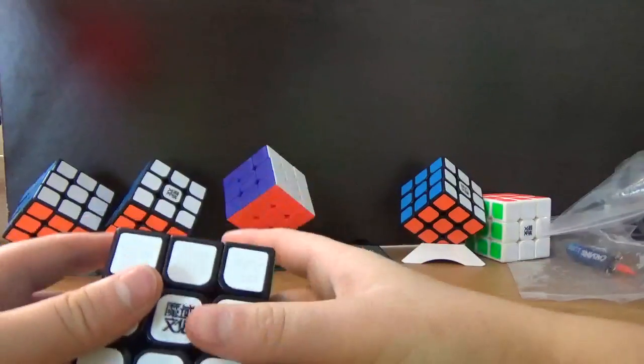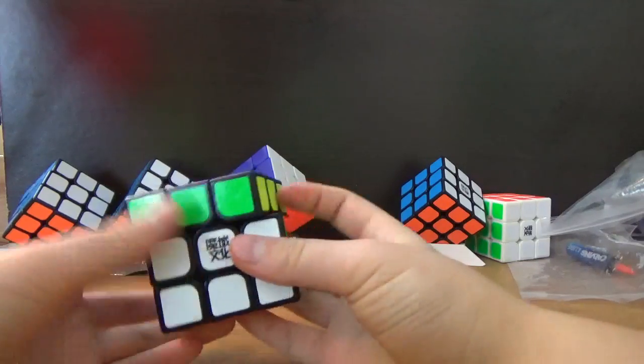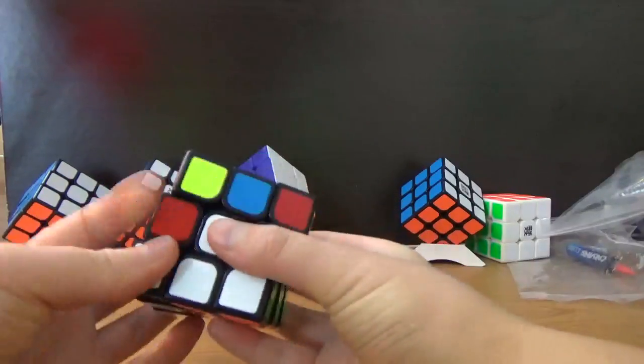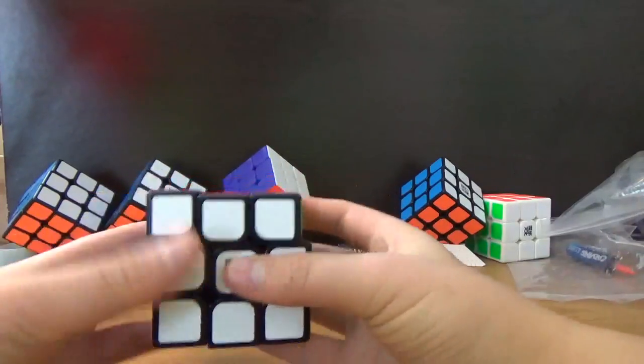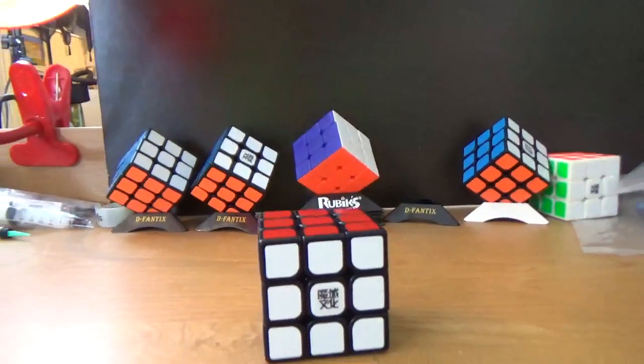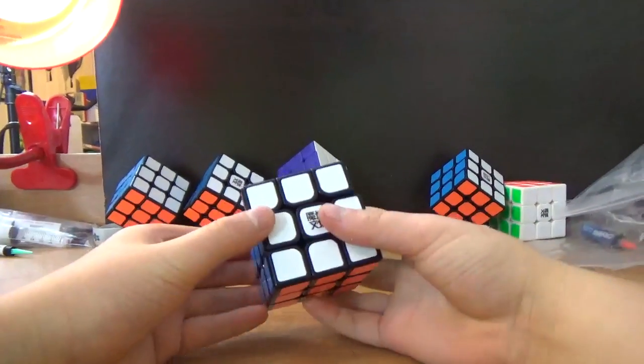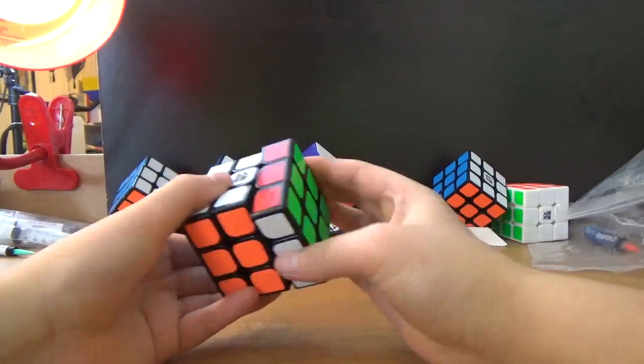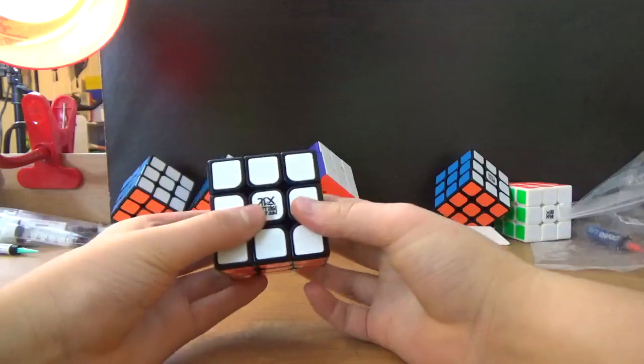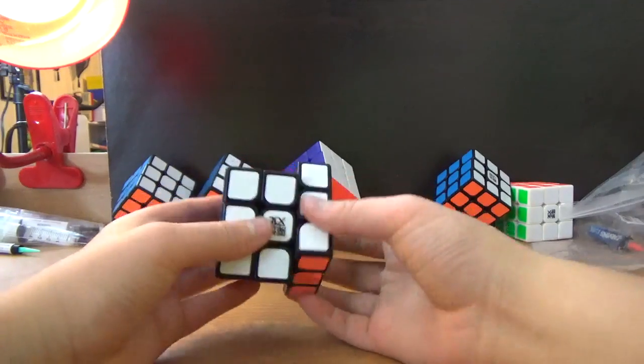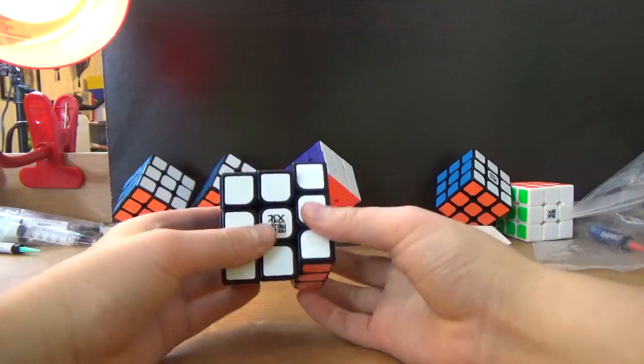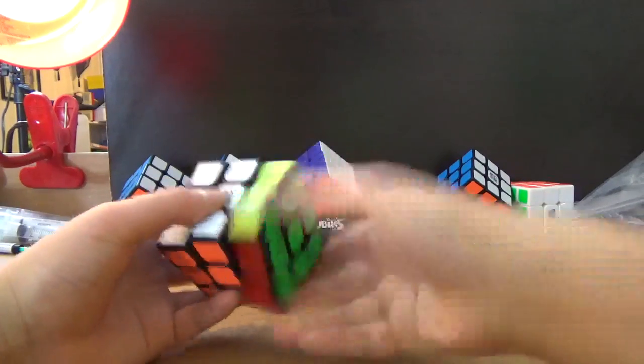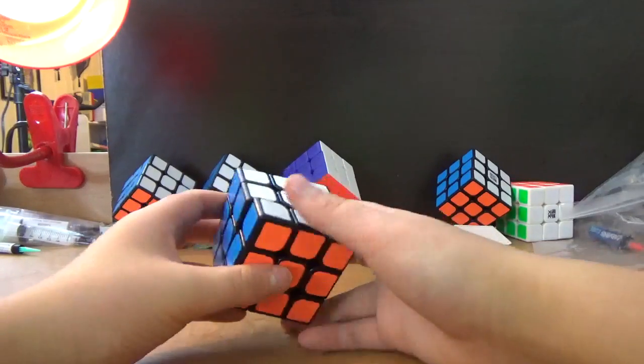Okay, so this is the Moyu Aulong, I think, yeah. This is a pretty good cube. I don't have anything bad to say about it. The corner cutting's great, the reverse corner cutting, I think this is reverse corner cutting, yeah I'm pretty sure. It's pretty good. So yeah, pretty good cube. Let's move on.